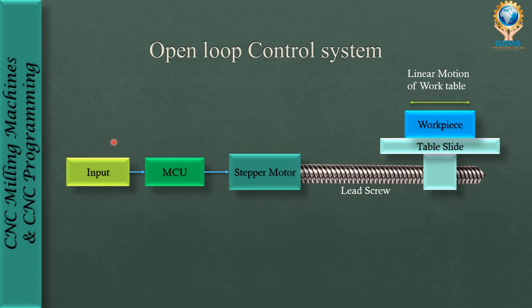In the layout of the open loop control system, we first give an input signal to the MCU. From the MCU it is sent to the stepper motor, which then drives the lead screw, which moves the table. Above the table, the workpiece is placed.